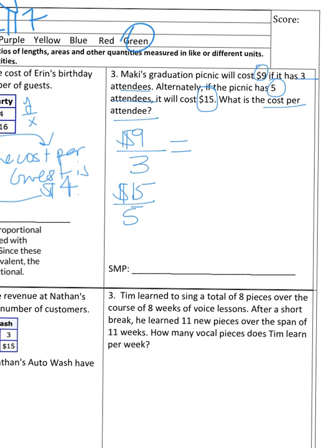How many times does 3 go into 9? 3 times, so $3 for every 1 guest. Now let's look at the second one. 5 goes into 15, 3 times. The price is on the numerator, so that's the cost. And the 1 represents attendees.